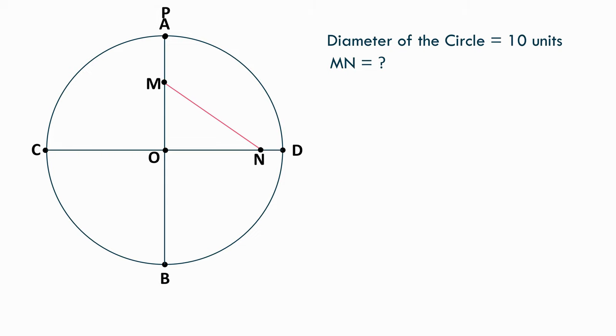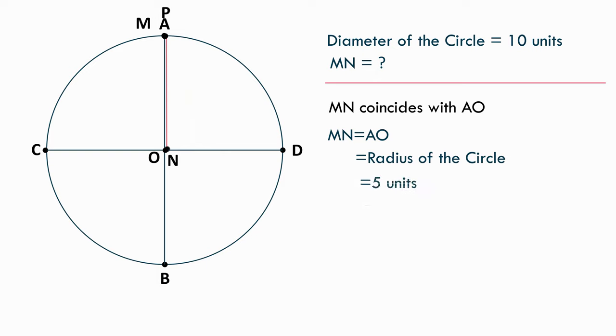In that case, MN coincides with AO, which is the radius of the circle, which is 5 units.